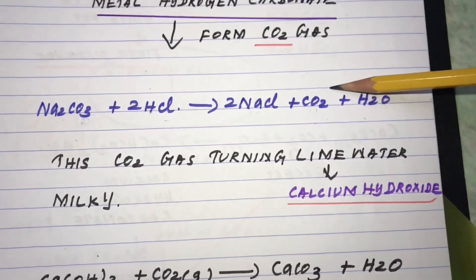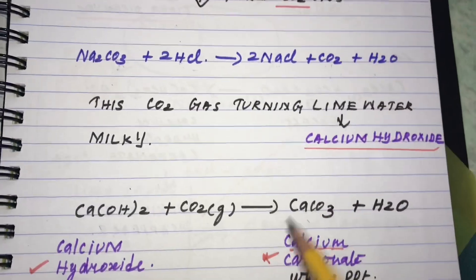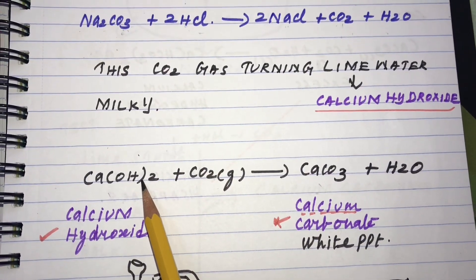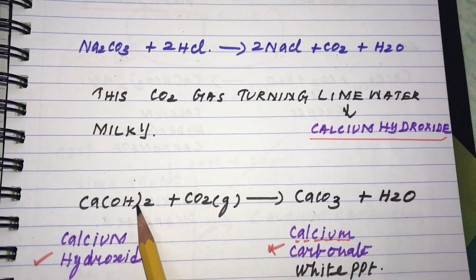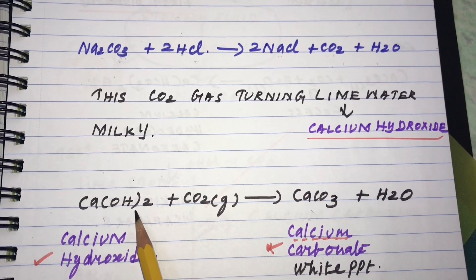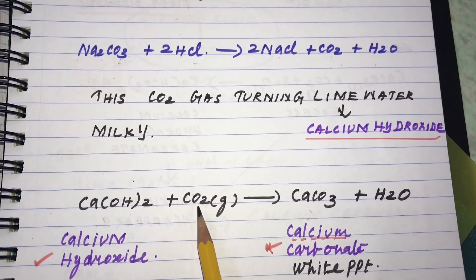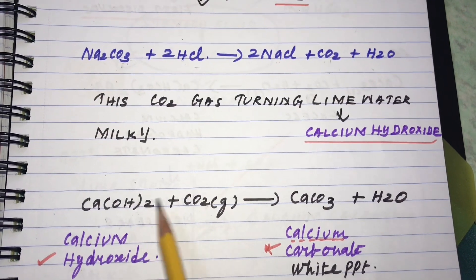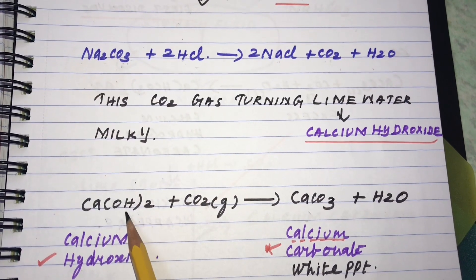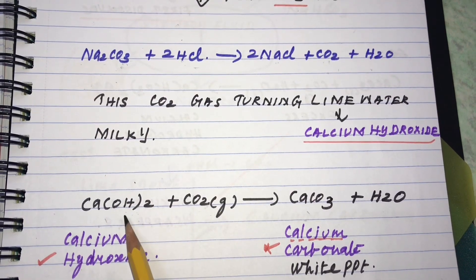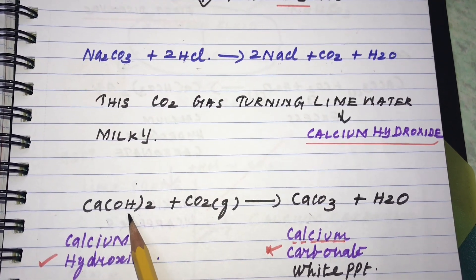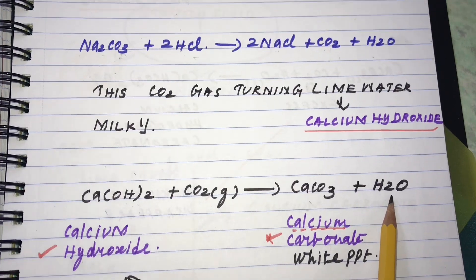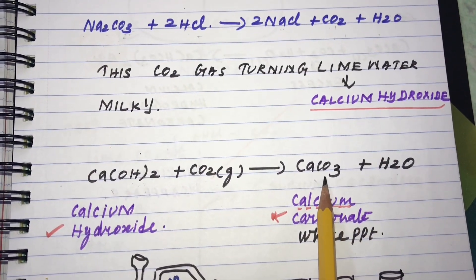To test the release of carbon dioxide, we pass the CO₂ through calcium hydroxide (slaked lime). The carbon dioxide reacts with calcium hydroxide — CO₂ plus Ca(OH)₂ — forming calcium carbonate and water (H₂O).